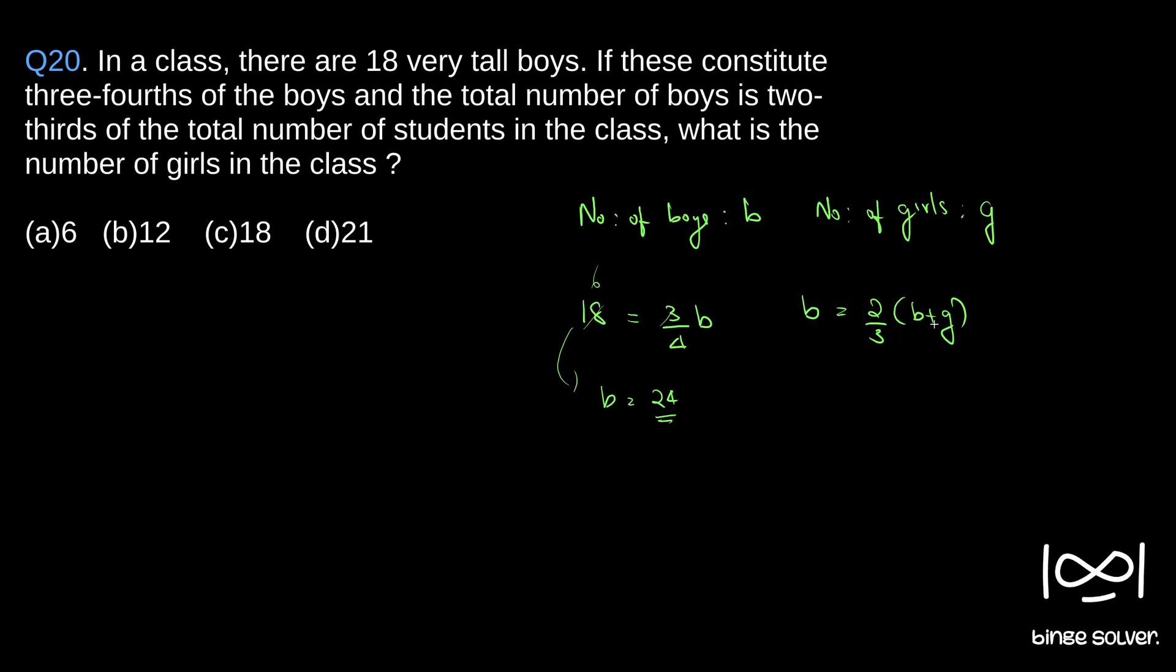So now we have to find G from this. So 24, from this equation, 24 is equal to two by three into 24 plus G. So again, 12.